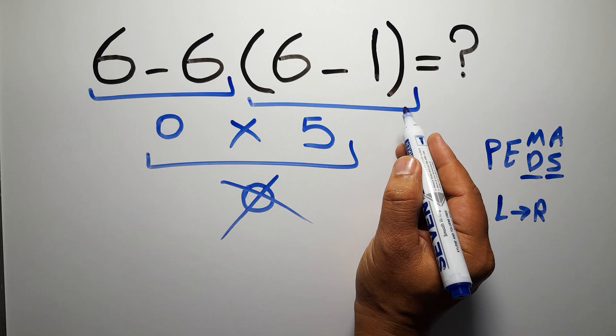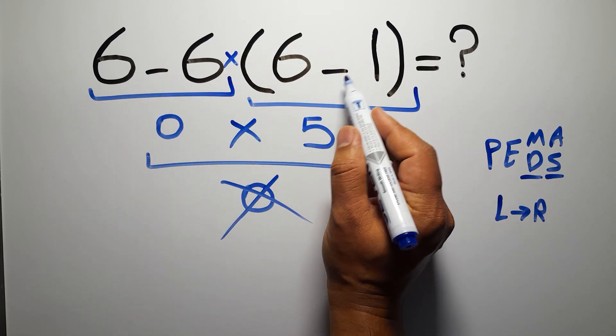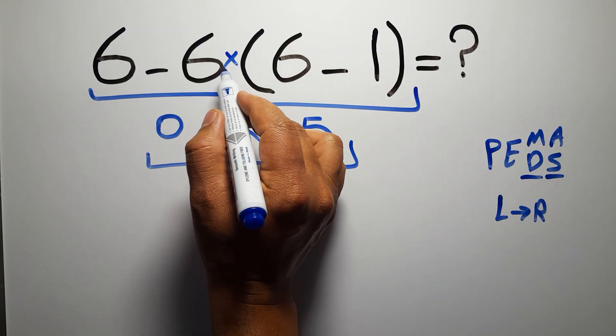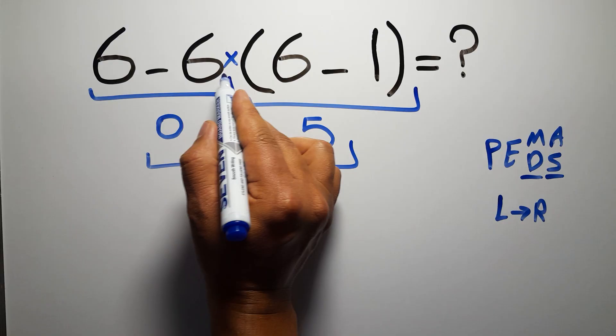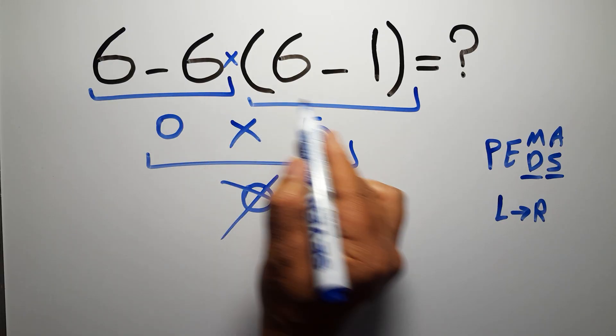In this expression, we have 1 subtraction, 1 multiplication, and 1 parenthesis. Inside these parentheses, we have 1 subtraction. Here we have a multiplication, because in mathematics when a number is placed next to parentheses, it means multiplication, and we usually don't write a multiplication sign for variety.